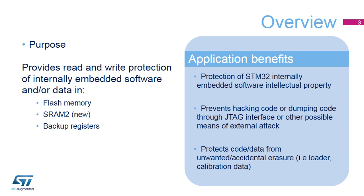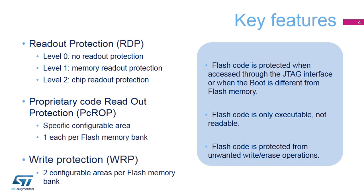These features can prevent the reading or writing of code and/or data through the JTAG Debugger, End User Code, or SRAM Trojan Code. The following means are provided for code protection purposes: RDP (Readout Protection), PCROP (Proprietary Code Readout Protection), and WRP (Write Protection). These features are configurable via the STM32L4 option bytes.